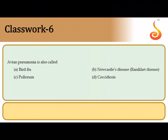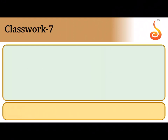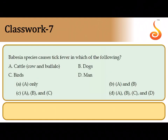The sixth question: avian pneumonia is also called — it is a disease referred to as Newcastle disease or Ranikhet disease, which causes diarrhea and severe respiratory symptoms in birds. That is why it is called avian pneumonia.